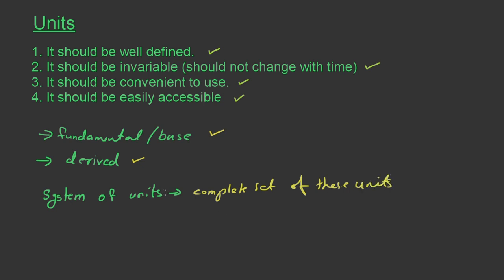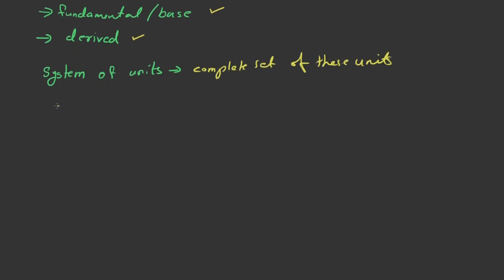In earlier times, even in scientific studies, there were many systems of units in practice. We are going to see two of them. One, the CGS system, and two, the FPS system. In the CGS system, the units of length, mass, and time are centimeter, gram, and second respectively. And in the FPS system, the units of length, mass, and time are foot, pound, and second respectively.